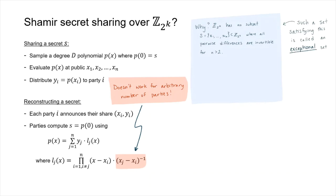As a side note, we're going to call a set where the difference of each pair is invertible an 'exceptional set.' Basically, if you have a large enough exceptional set, then you can interpolate.